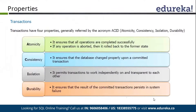Here we call it ACID - the ACID principle that is used in transactions. A means Atomicity. It simply means all the operations are completed successfully, or no operation is completed. Means if there is any issue with any of the transaction actions, we just roll back everything. So we maintain our atomicity.